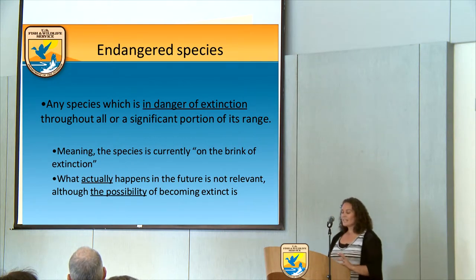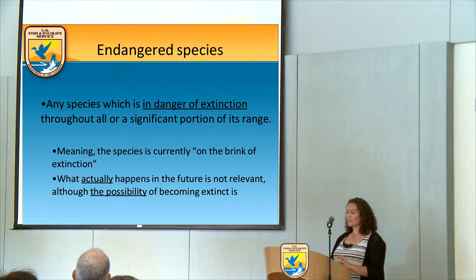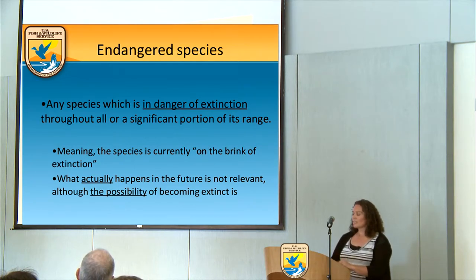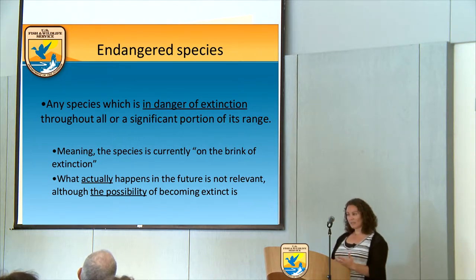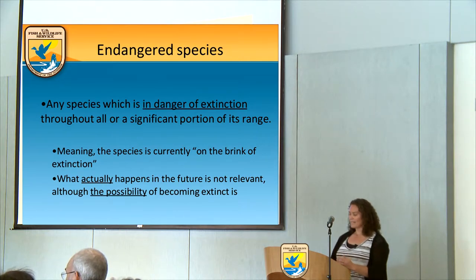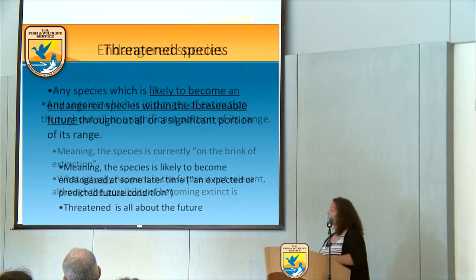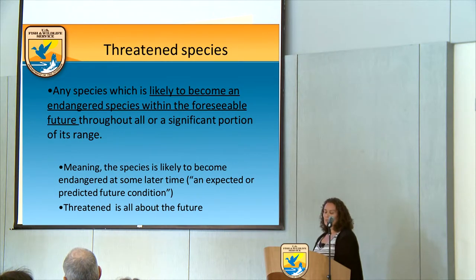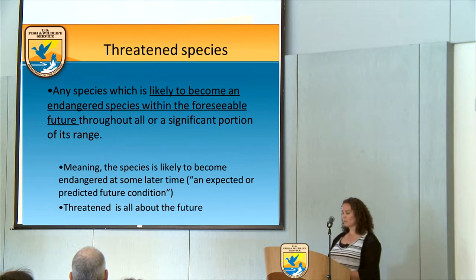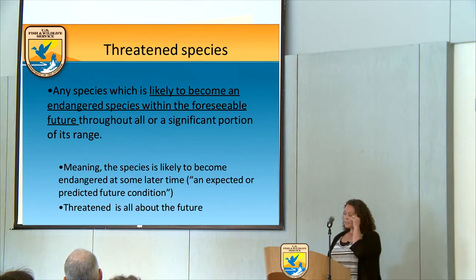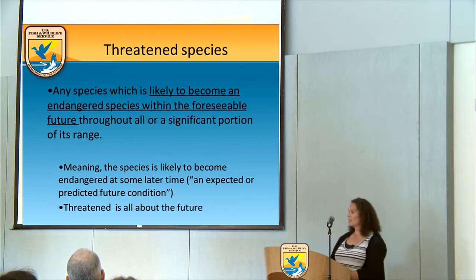An endangered species is defined as any species which is in danger of extinction throughout all or a significant portion of its range, meaning the species is currently on the brink of extinction. A threatened species is any species which is likely to become an endangered species within the foreseeable future throughout all or a significant portion of its range. So threatened is all about the future.